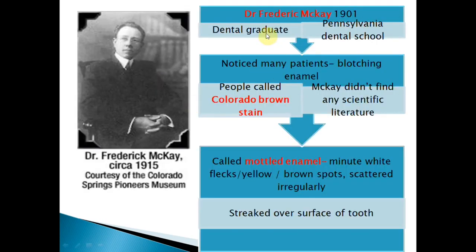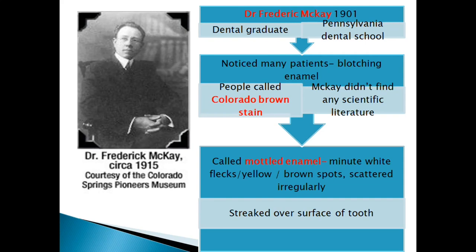The historical evolution of fluorides starts with Dr. Frederick McKay. In 1901, he finished his dental graduation from Pennsylvania Dental School and started practicing in Colorado Springs, USA. There he found peculiar enamel markings in many patients — brown discoloration and hypermineralization — which he could not find in any scientific literature. He called this 'mottled enamel,' which appeared as white flakes, yellow or brown spots scattered irregularly over the tooth surface. Dr. Frederick McKay is the first name to remember as the pioneer in fluorosis identification.